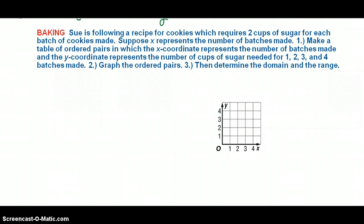All right. Let's tackle this big old word problem. My goodness, there's a lot of words right here. Sue, she is following a recipe for cookies which require two cups, there's a number there, two cups of sugar for each batch of cookies made. Suppose that x represents the number of batches made. Okay, so we don't know how many batches she's going to make. That's going to be x. But for every batch, she's going to need two cups of sugar. So that's two per batch.